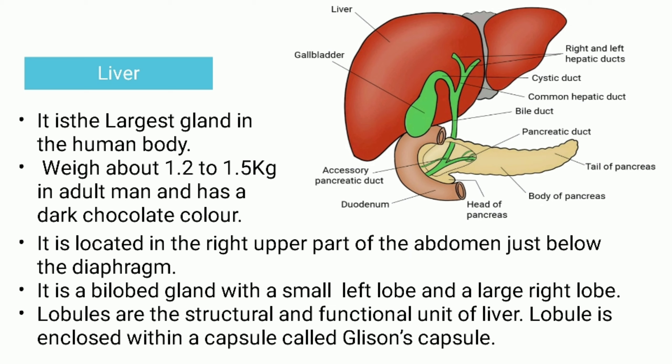The liver is the largest gland in the human body. It weighs about 1.2 to 1.5 kg in adults and has a dark chocolate color. It is located in the right upper part of the abdomen, just below the diaphragm. It is a bilobed gland with a small left lobe and a large right lobe. The lobules are the structural and functional unit of the liver, enclosed in a capsule known as Glisson's capsule. Cells of the liver are known as hepatic cells, and the duct arising from them is known as the hepatic duct.